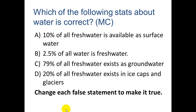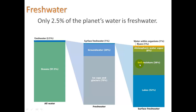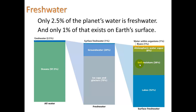Welcome back. I hope you picked B as the correct choice. How can we make A correct? We would have to change that 10% to 1%. For C and D, I actually got those stats flipped: 79% is ice caps and glaciers, and 20% is groundwater. Here are some diagrams just to emphasize that.